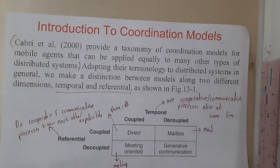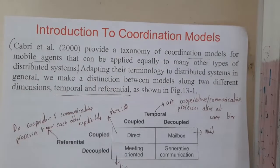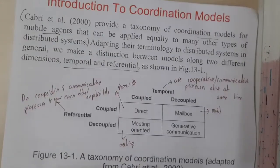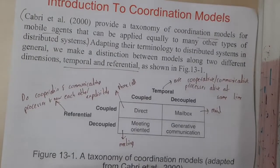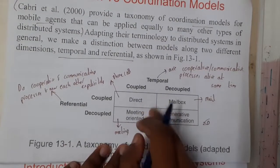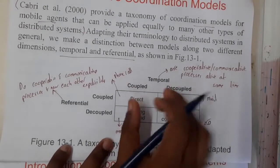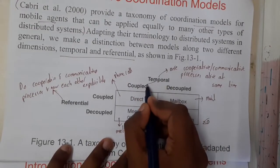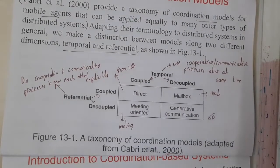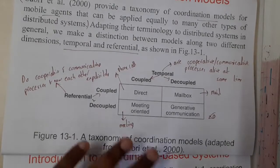Now let us go through the taxonomy. This is called the taxonomy model for mobile agents. This is a popular taxonomy given in 2000. Basically this taxonomy is a two-dimensional thing — drawn on two axes, in a tabular format. On one side we have temporal coupled and decoupled, and on the other side referential coupled and decoupled.